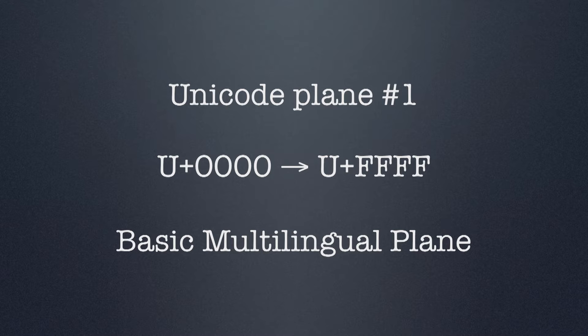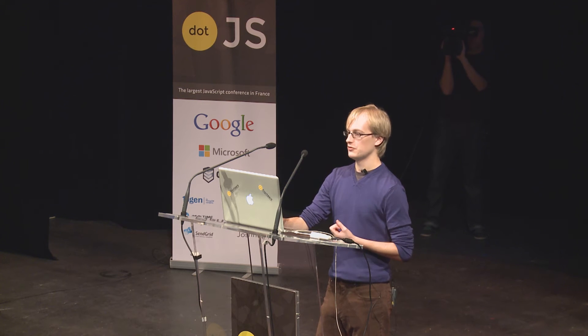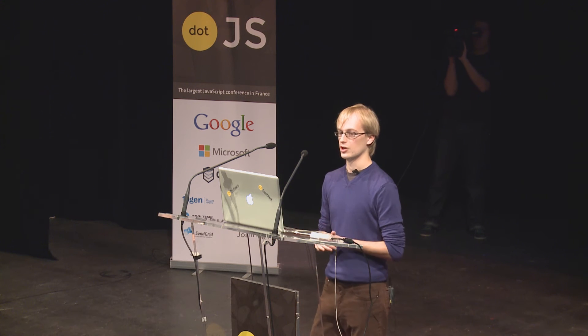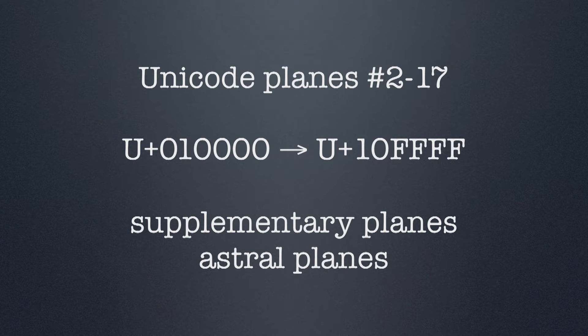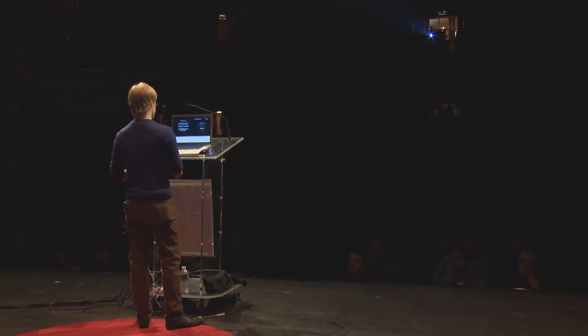Whenever you're writing a document in English, or even French, chances are you won't need any symbols outside of this range — just this BMP range will do in most cases. All the code points from zero to FFFF are contained within this range — those are 65,000 symbols. That leaves about one million other symbols spread across the other planes, called the supplementary planes or the astral planes. These are simply the code points and symbols that are not part of the BMP. And that's all you need to know about Unicode to understand the rest of this presentation.